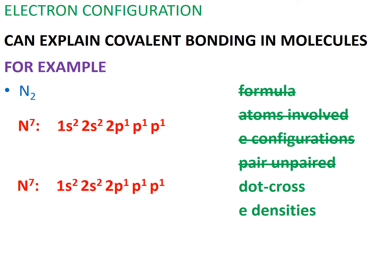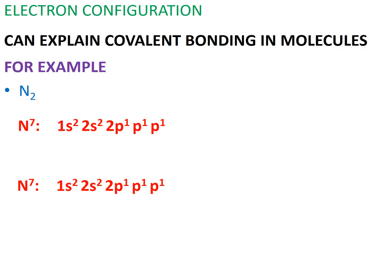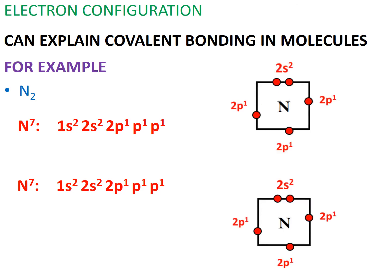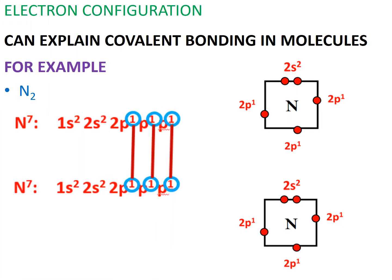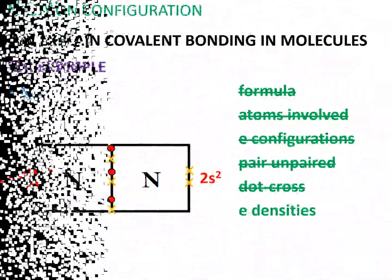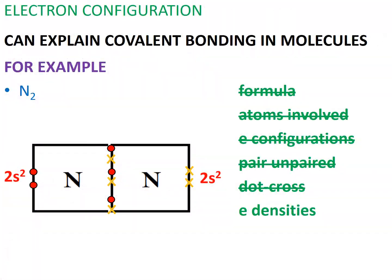We can also show the bonding of these orbitals using dot-cross diagrams. Remember that for each bonded atom, we only need to show their valence shell and valence shell electrons. Each of these atoms have three unpaired electrons. And although it appears impossible to bring these three electrons together, it actually isn't. Now that we have a complete dot-cross diagram of nitrogen, we can still describe the electronic structure of the atoms within this molecule.